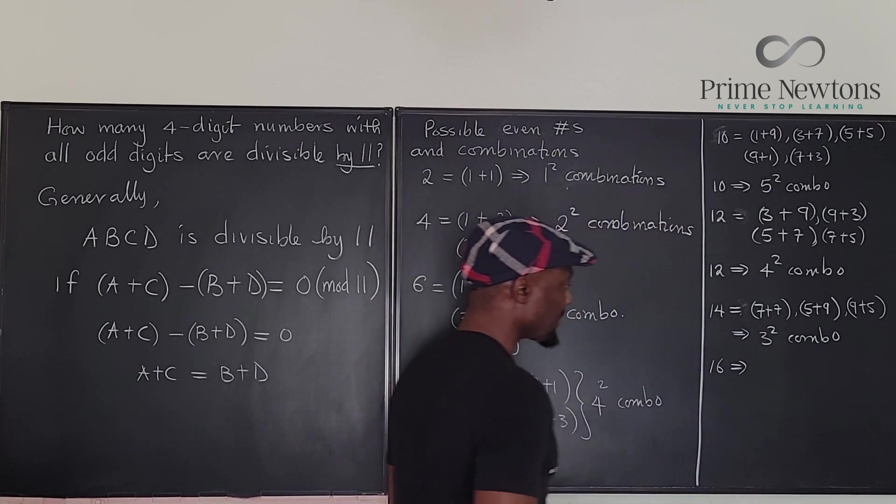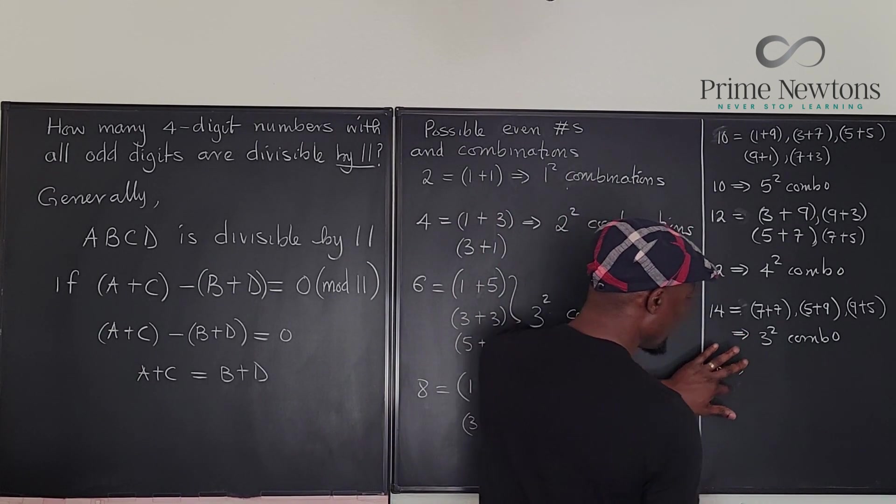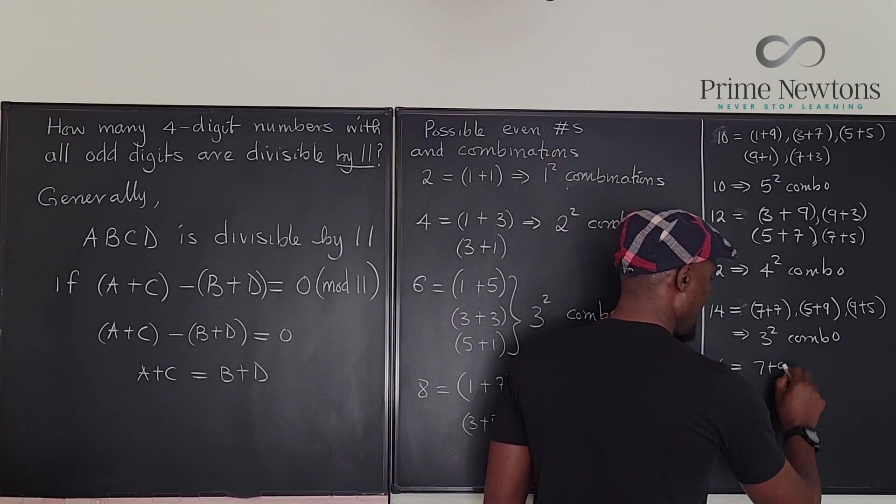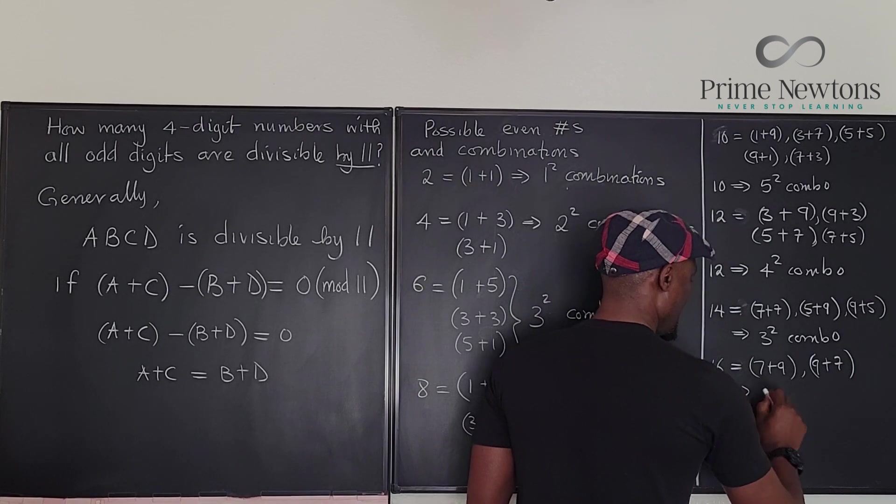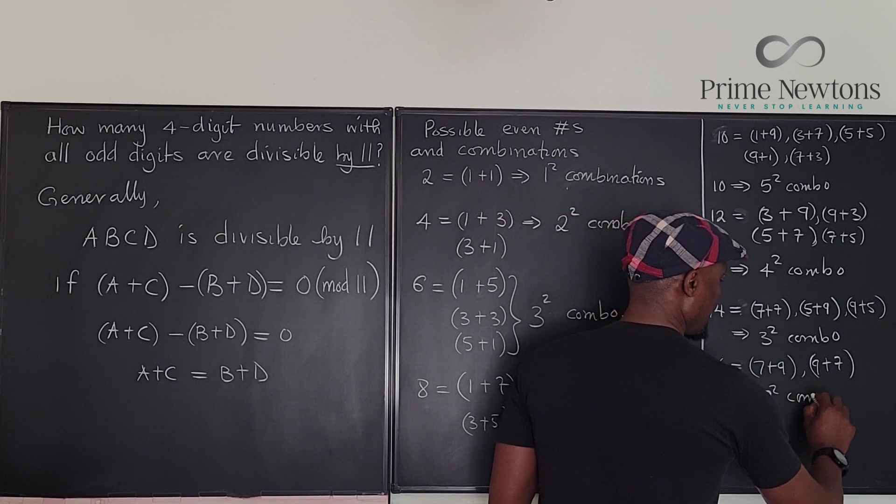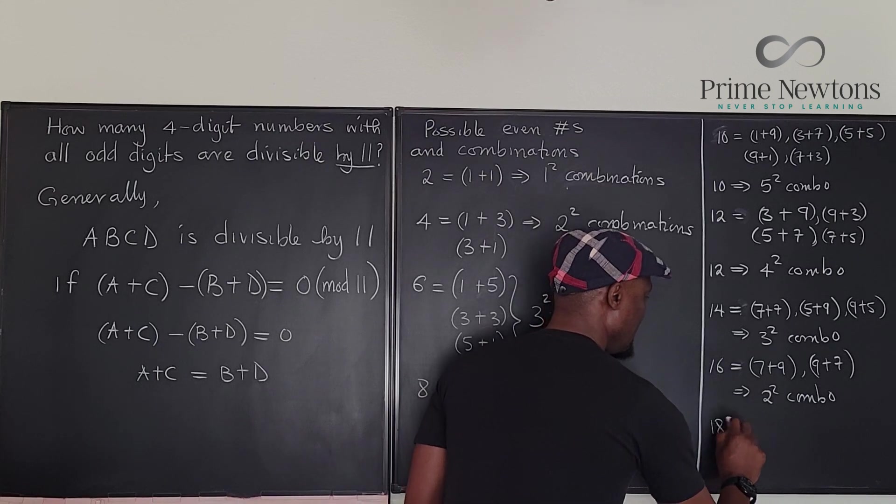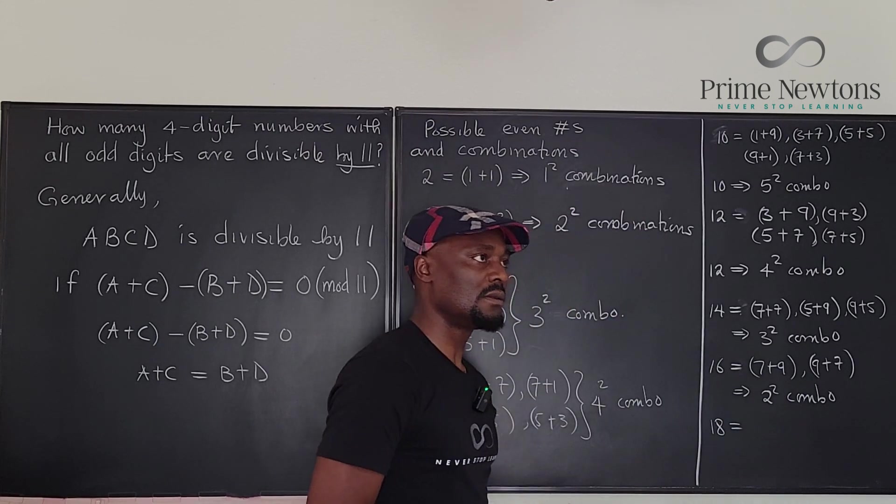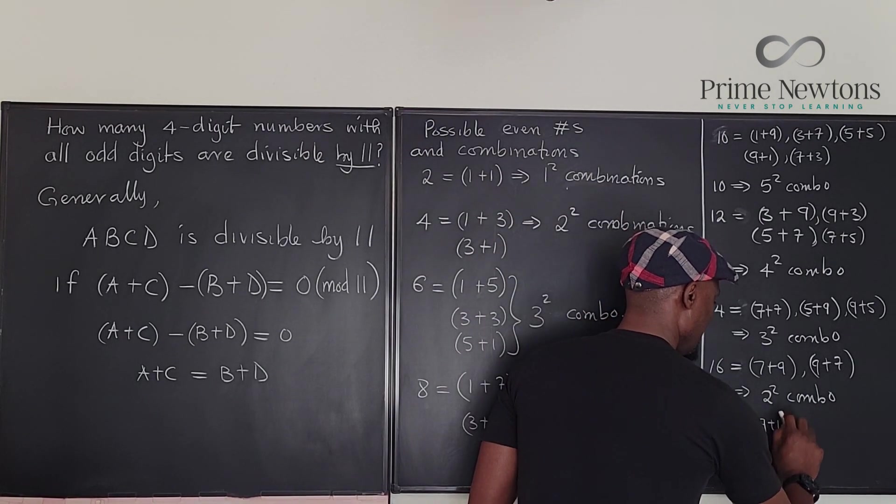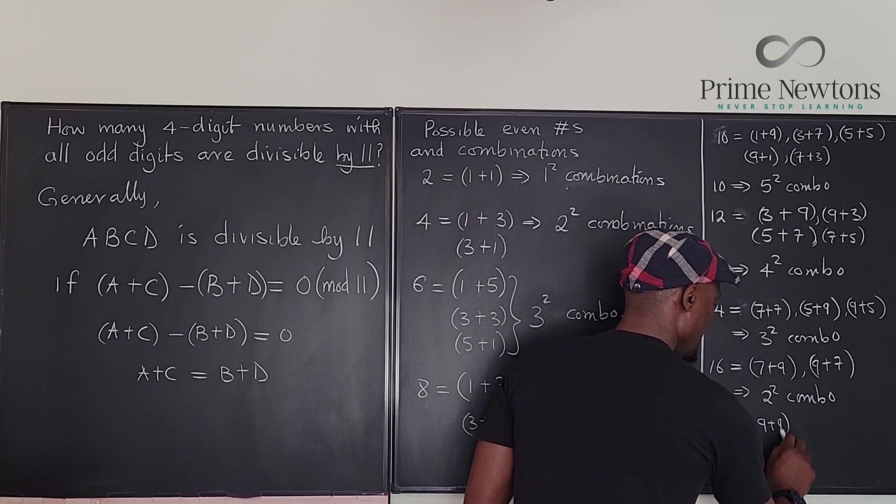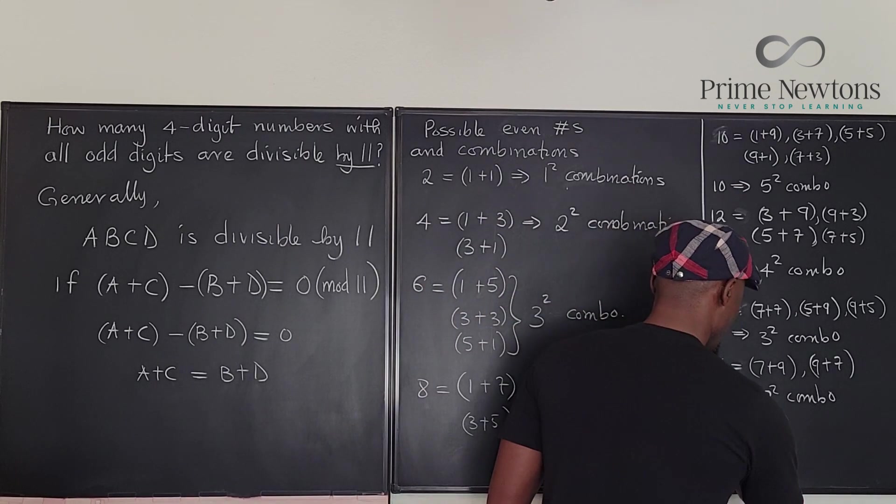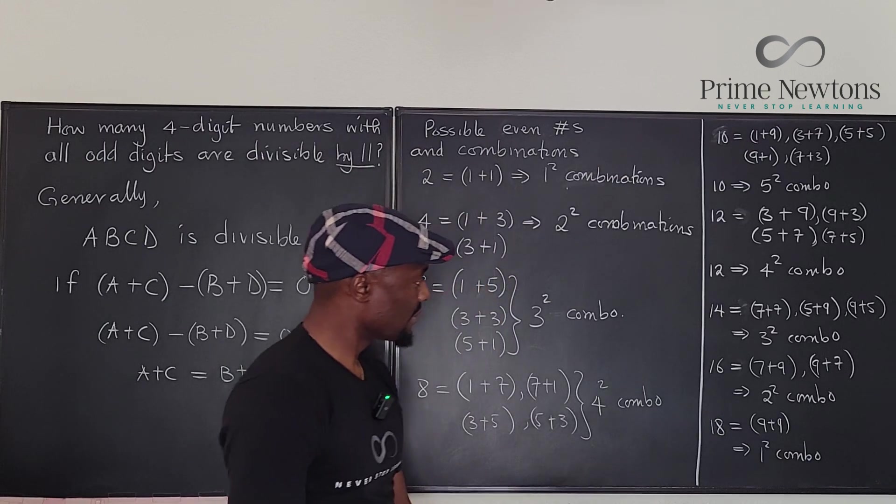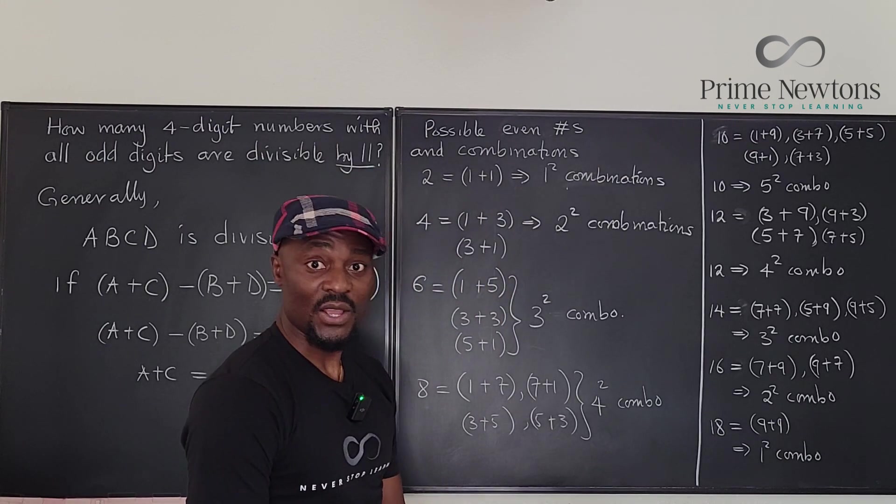We have 16. 16 will be equal to 7+9 and 9+7. So that is 2 squared combinations. And then 18 will be equal to 9+9. There is no other combination that's going to give you 18 if you're dealing with odd numbers. So this implies 1 squared combination. That's it.